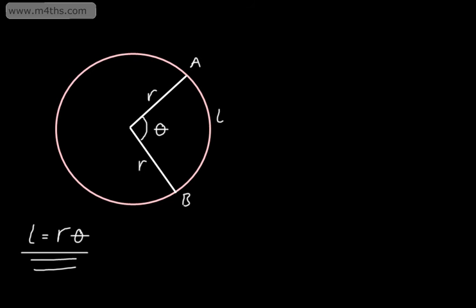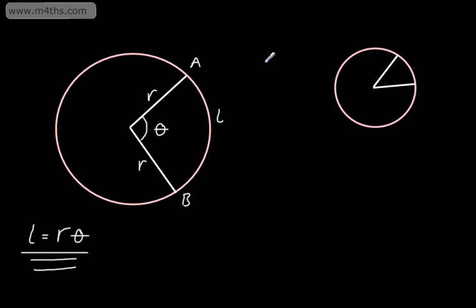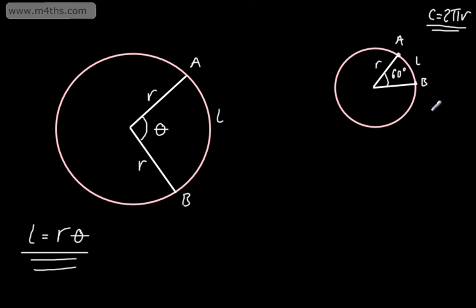Let's look at how this works. Going back to using degrees, I'll draw a circle and put an angle of 60 degrees. The radius and the arc from A to B are shown. We know from previous work that the circumference of a circle is 2πr. To find the arc length, we take 60 degrees of the 360, multiplied by the circumference. So it's 60 over 360 times 2πr — all this is is a portion of the full 360.